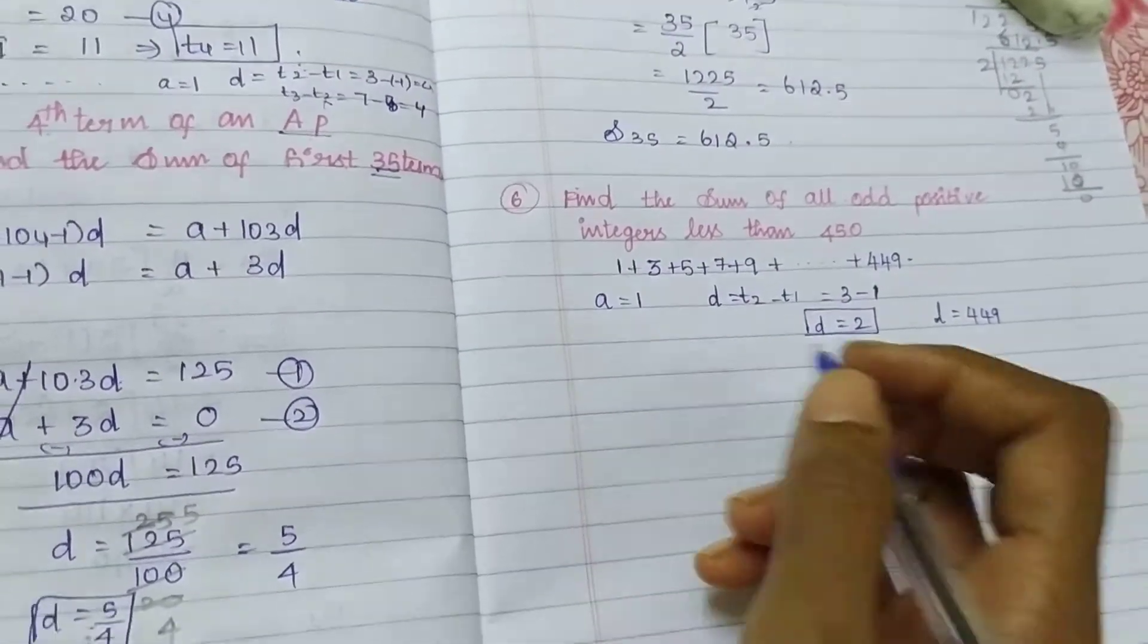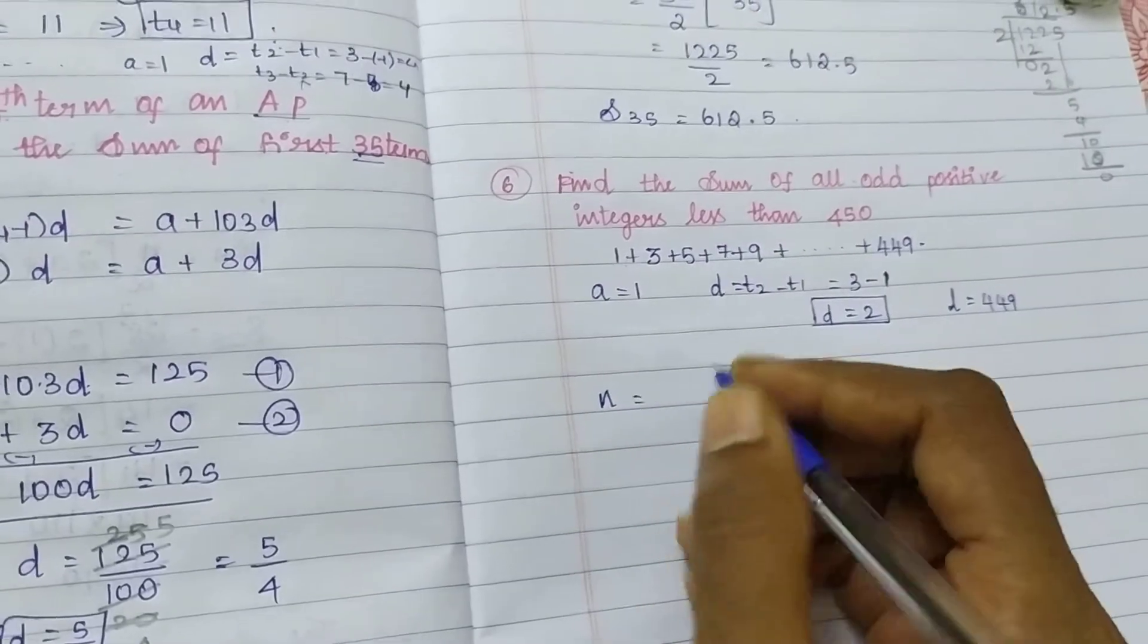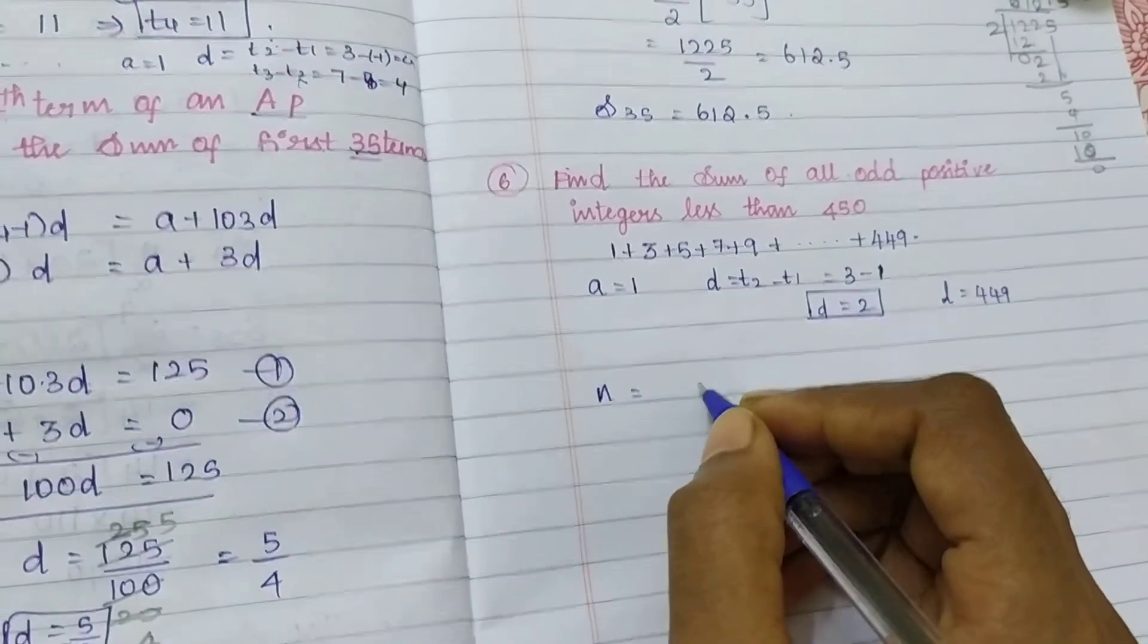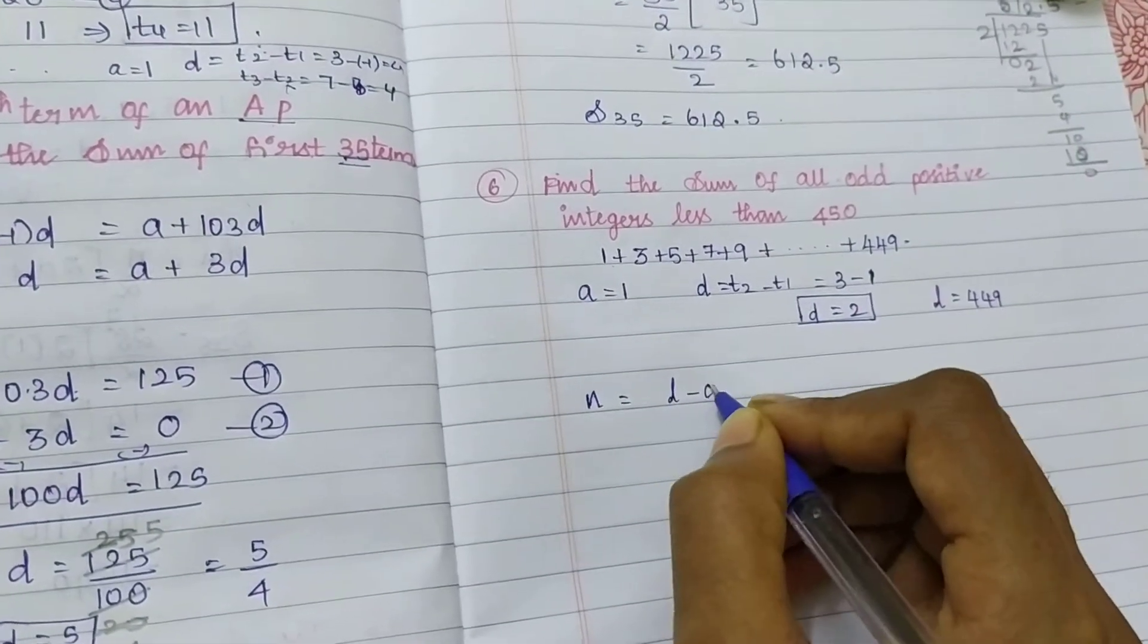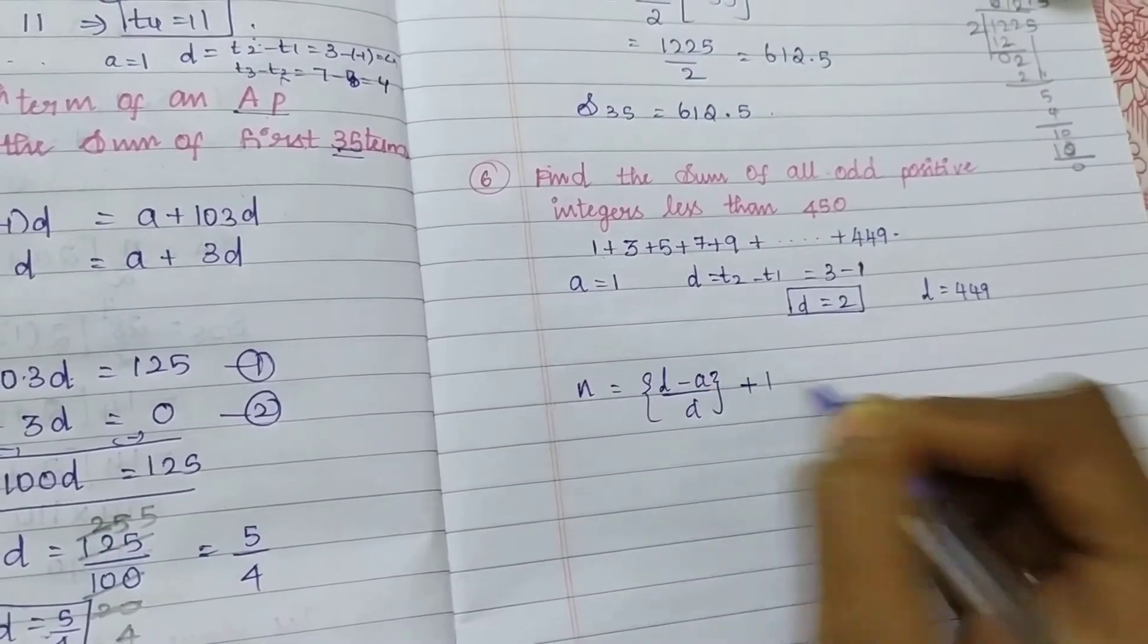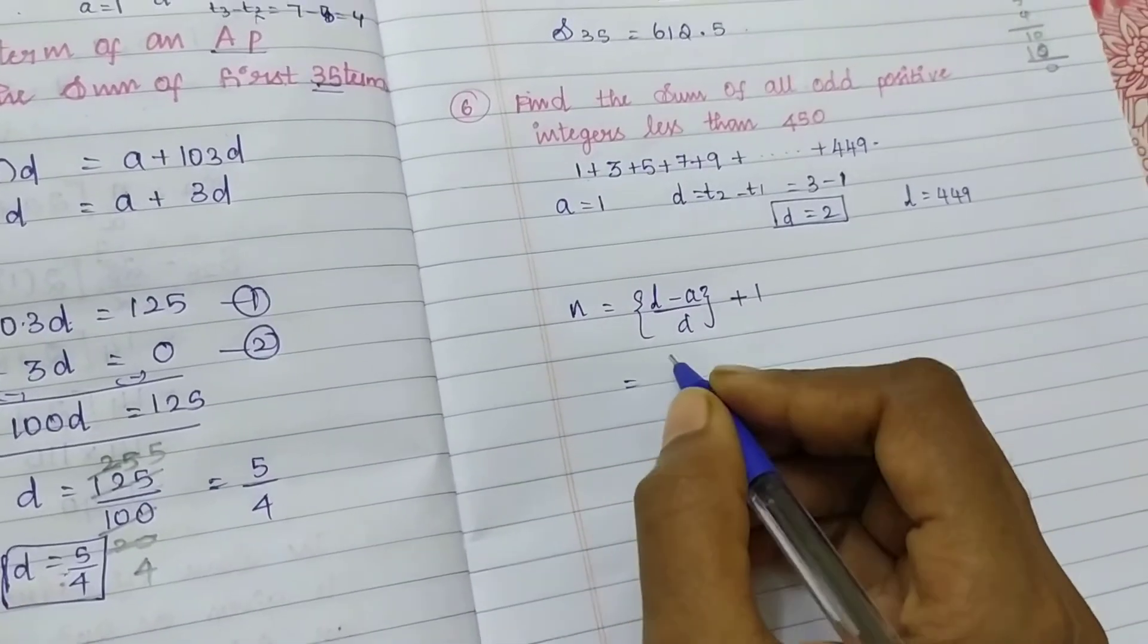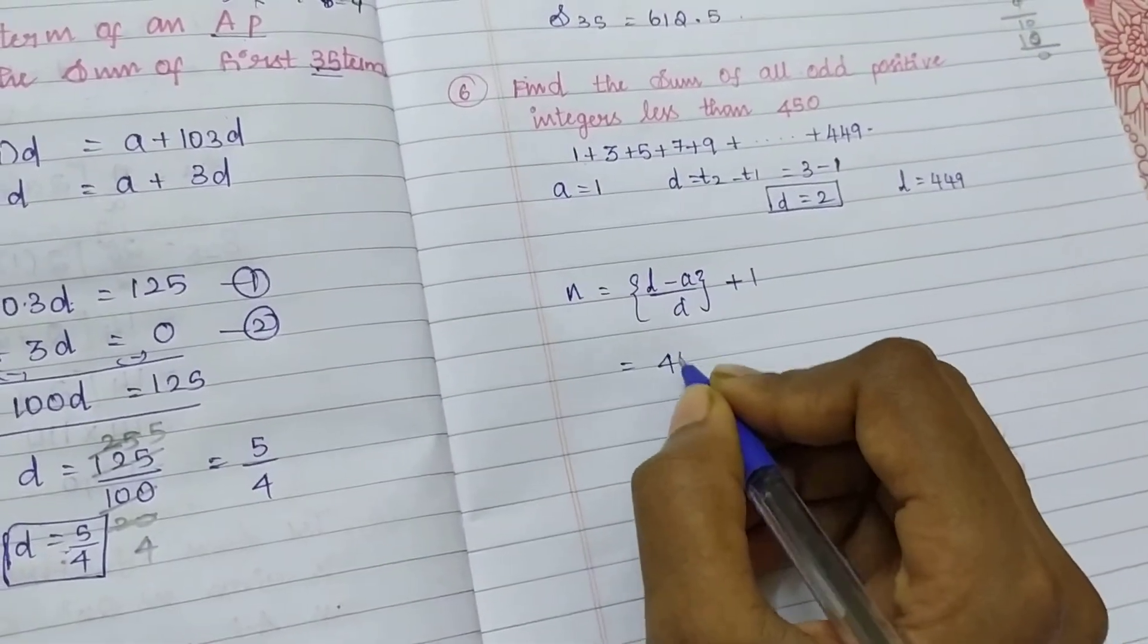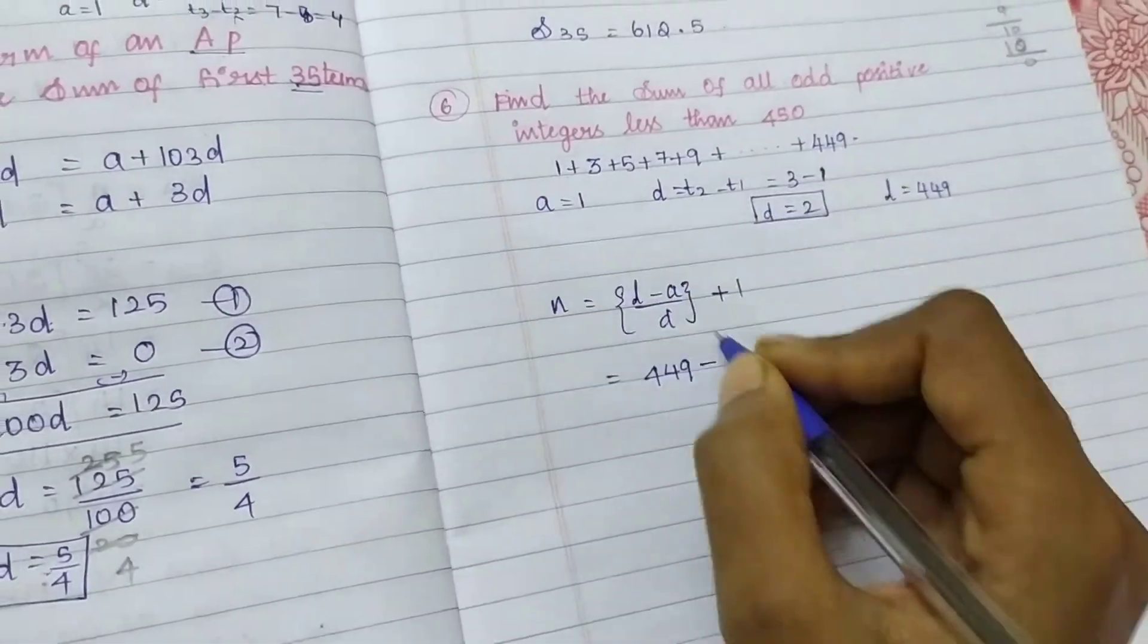First of all, I know my N value only, I can substitute in my formula. So N is equal to which formula? L minus A by D plus 1, right? So what is my L value?